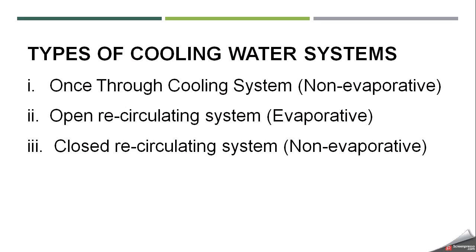There are mainly three types of cooling water systems: once-through cooling system, open recirculating system, and closed recirculating system. Once-through and closed recirculating systems are both known as non-evaporative, while the open recirculating system is known as an evaporative system. We will describe each of these three systems one by one.